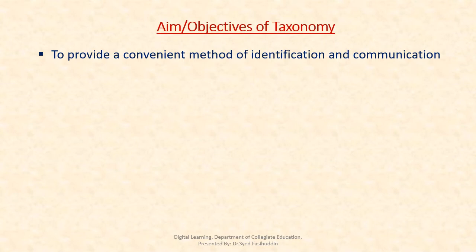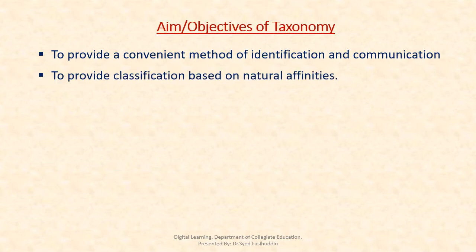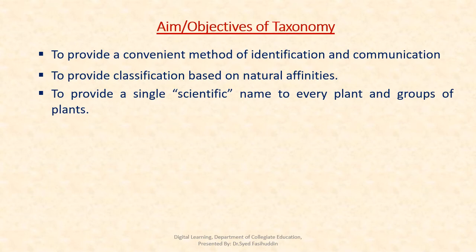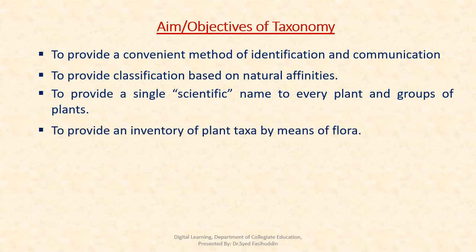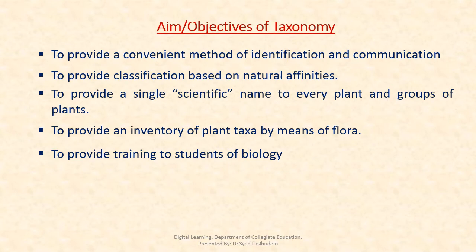The aims of taxonomy: the first is to provide a convenient method of identification and communication. The second is to provide a classification based on natural affinities. The third is to provide a single scientific name to every plant group. The fourth is to provide an inventory of plant taxa by means of floras. The last is to provide training to students of botany.